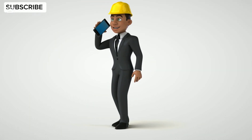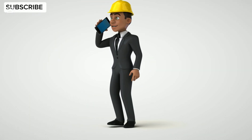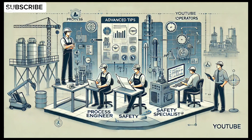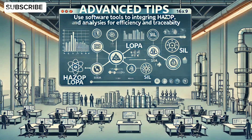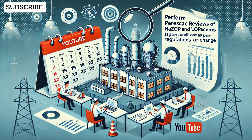The process requires seamless collaboration between process engineers, safety specialists, and operators to ensure alignment. Use software tools to integrate HAZOP, LOPA, and SIL analyses for efficiency and traceability. Perform periodic reviews of HAZOP and LOPA outcomes as plant conditions or regulations change.